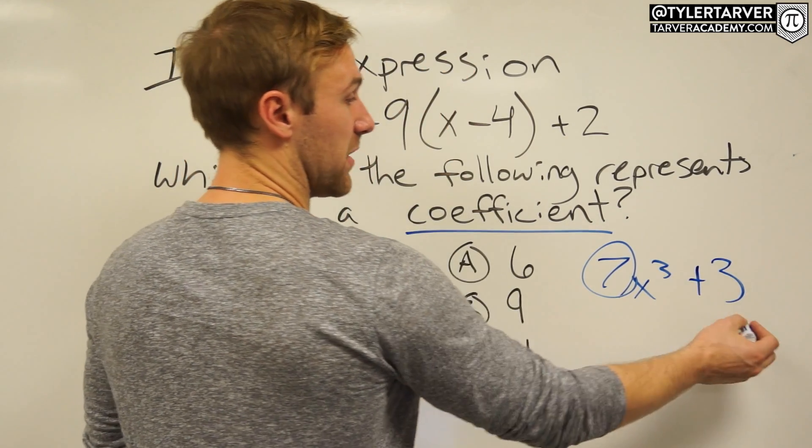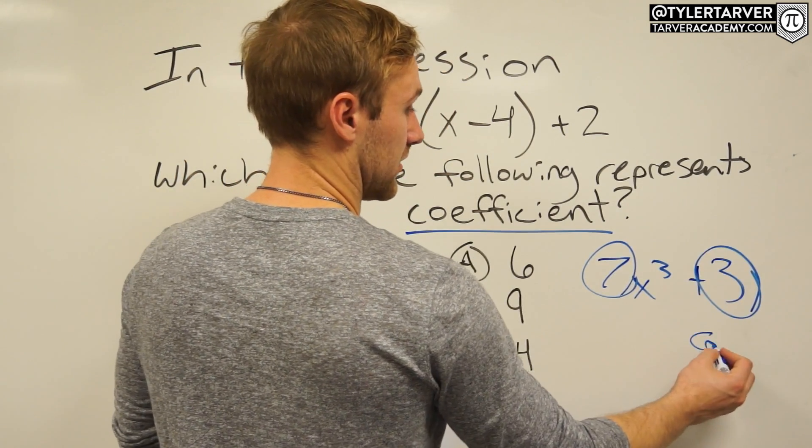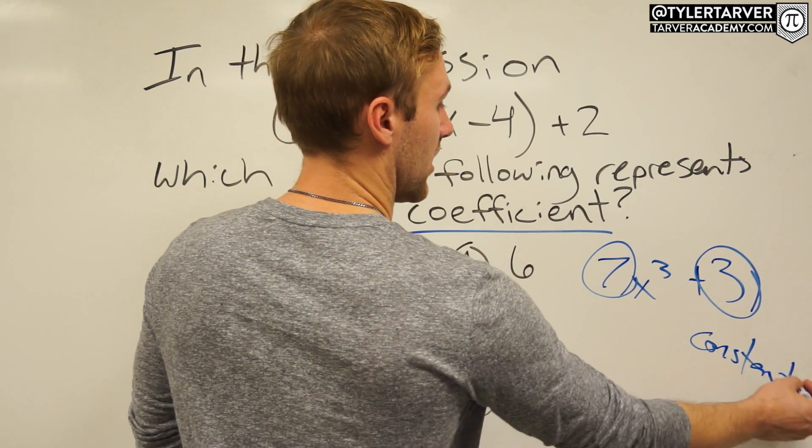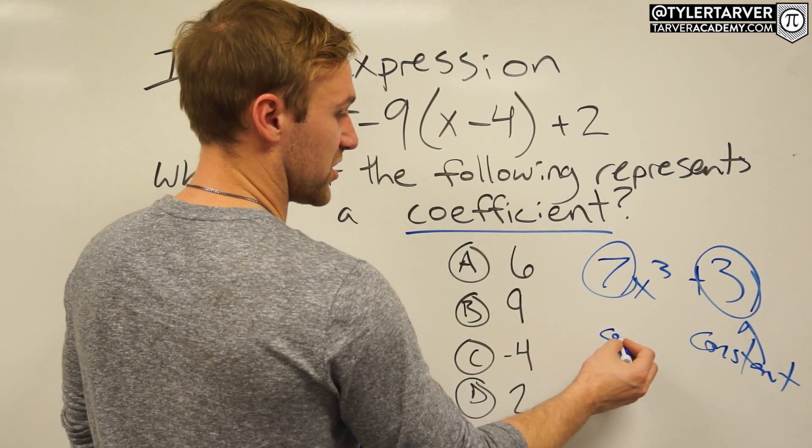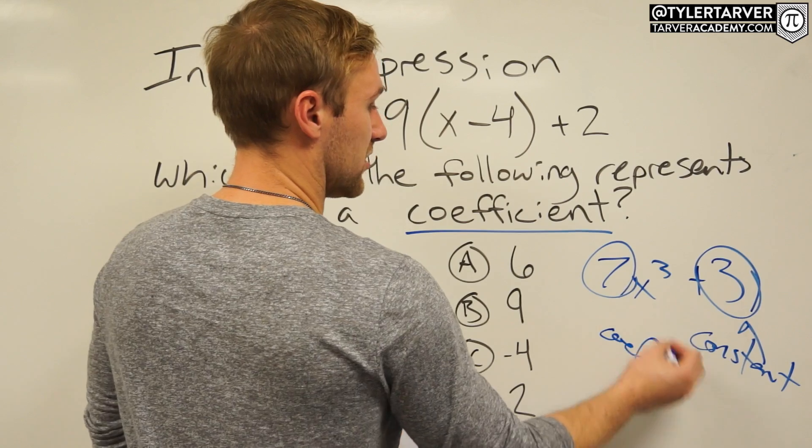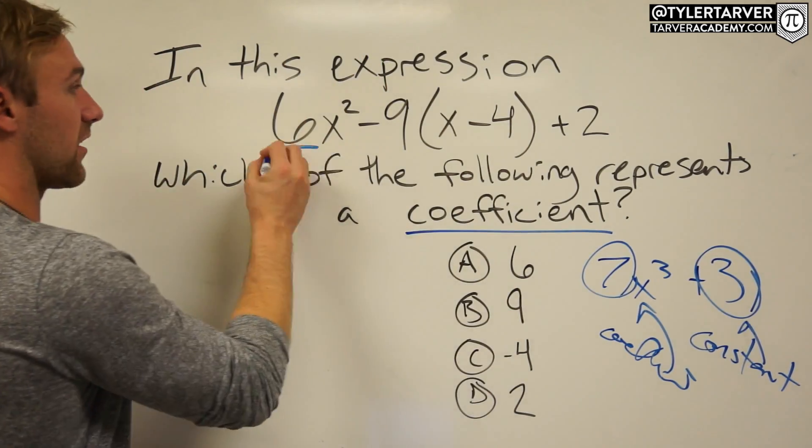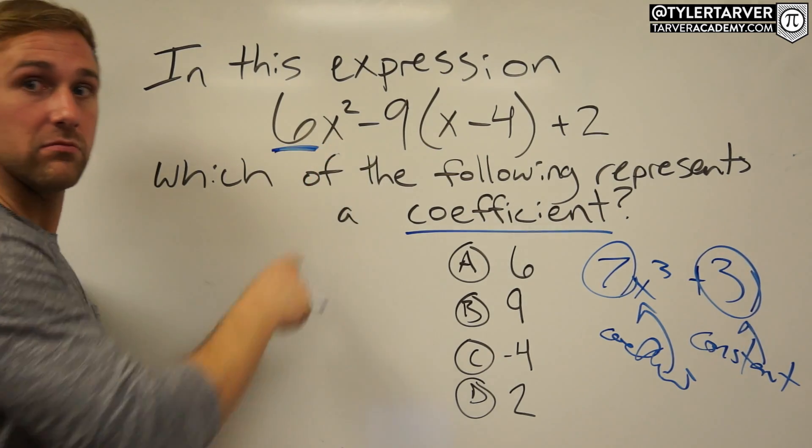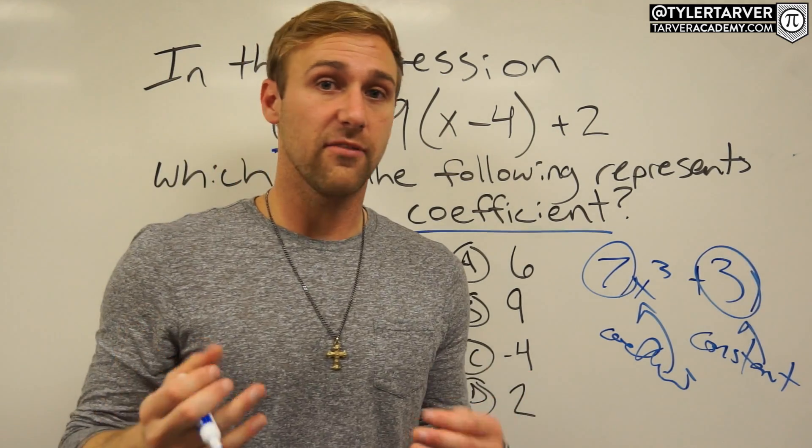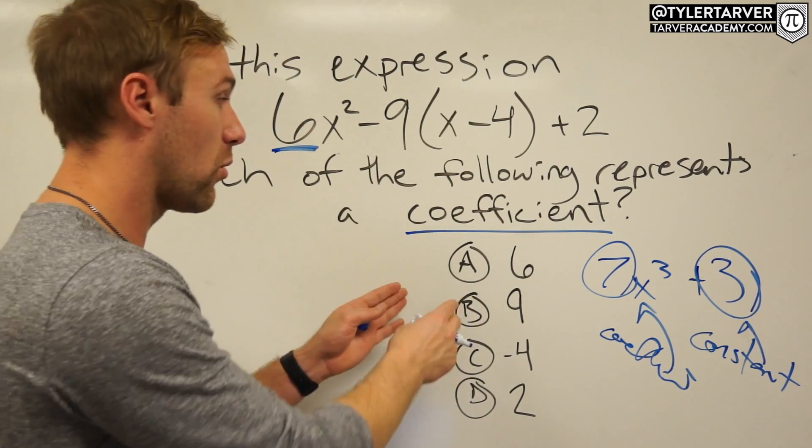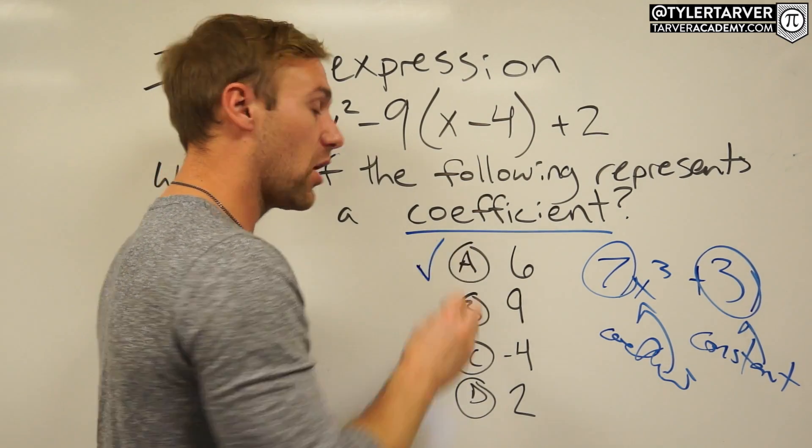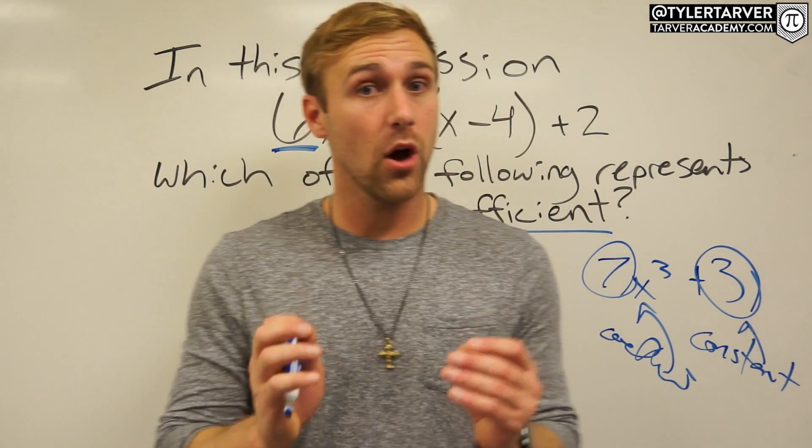Now does anyone know what a constant is? A constant is a number that's off by itself, like right there. This would be a constant, or constant coefficient. So we need to look at which one of these fits in there. Find six right here. Is six in front of a variable? Yes it is, therefore it is a coefficient.